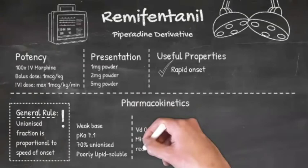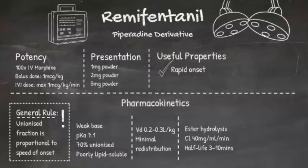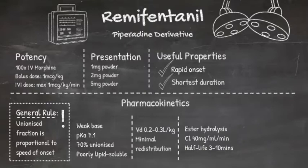Remifentanil has a very small volume of distribution and is poorly lipid soluble, but its clearance is considerable because it is rapidly metabolized by plasma and tissue esterases. It has an elimination half-life of three to ten minutes, making it the shortest acting opioid available. Because of these characteristics it is non-cumulative, so even after a prolonged infusion its offset will remain short. We say that the context-sensitive half-time of remifentanil is independent of the duration of infusion.